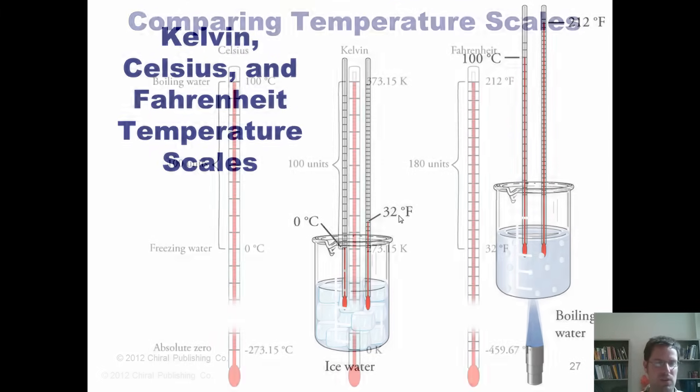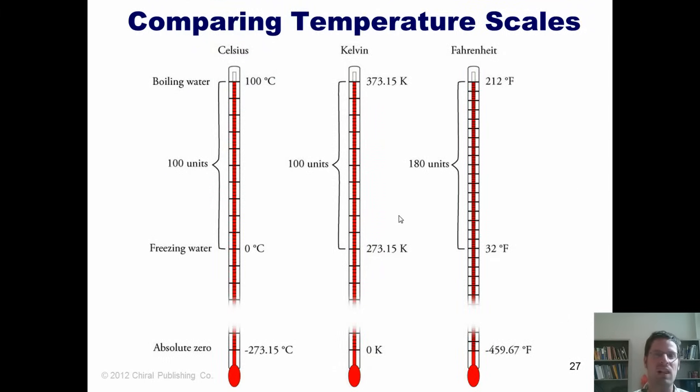As it turns out, there's a third system of measurement called the Kelvin system. And how does it compare to Celsius and Fahrenheit? Well, we can see by looking at this figure. Well, notice that in Celsius, water boils at 100 degrees. In Kelvin, water boils at 373.15. In Celsius, water freezes at 0 degrees. In Kelvin, water freezes at 273.15 Kelvins. Isn't that interesting?